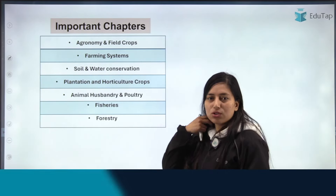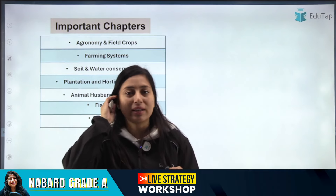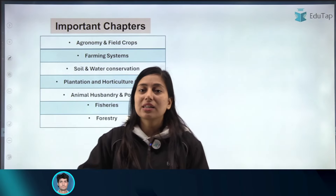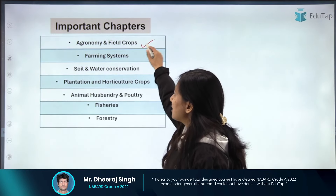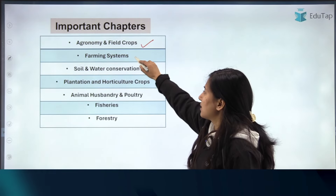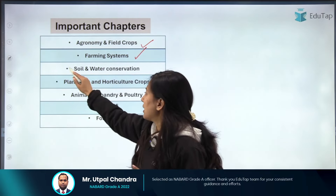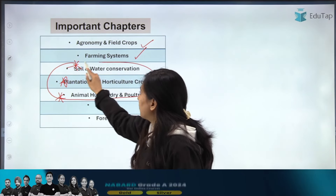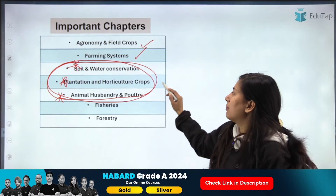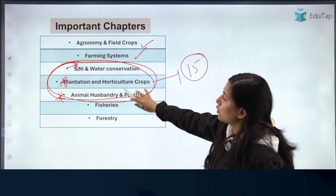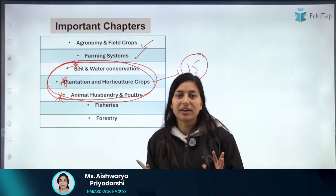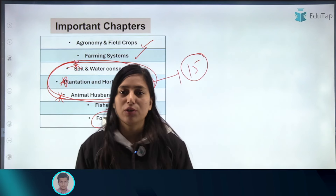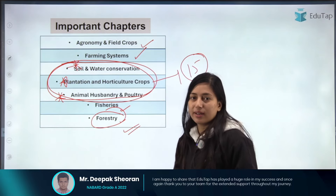Now, based on analysis of at least two to five years of previous papers, here is the list of important chapters. The most important are: agronomy and field crops, farming systems, soil and water conservation, plantation, and animal husbandry. You should prepare these three chapters very thoroughly, because at least 15 questions in the exam come from these three chapters alone — that is a huge weightage. Then fisheries, forestry — which is important for both objective and subjective — are also important chapters to cover well.